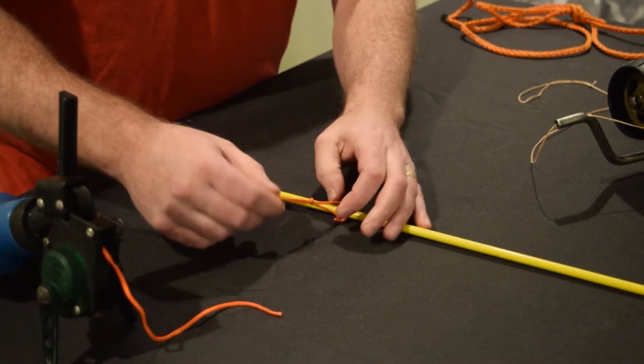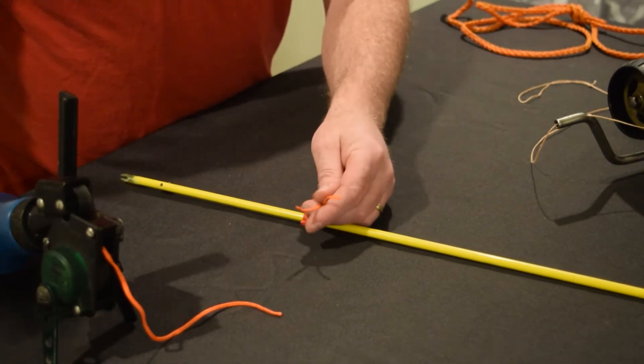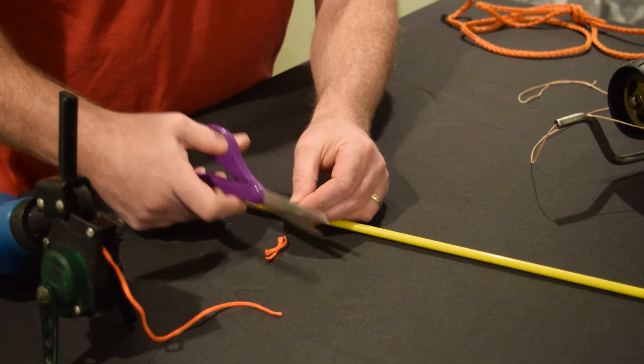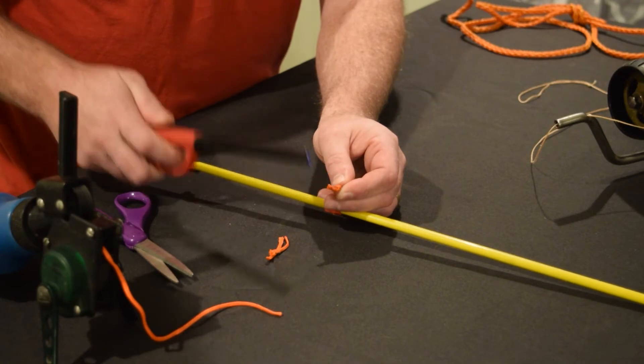And now I have a connection on the arrow, which is a loop. I'm going to take my scissors, trim the tag ends off, and hit it real quick with the lighter just to take off the frays.